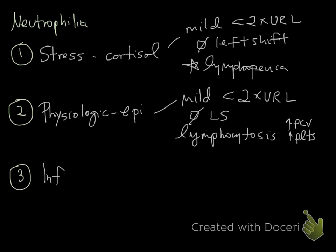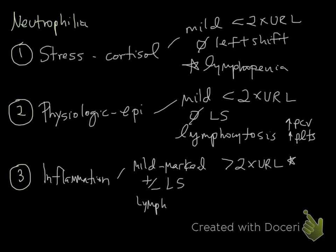And the last neutrophilia, the most important neutrophilia to recognize, is inflammatory or inflammation. And this actually has a lot of different ways of characterizing it, but I'm going to give you some general things. So the degree can be mild to marked. So anything greater than two times the upper reference limit proves it, but it can be less than. You can have a left shift or not, so you can have bands or less mature forms. Lymphocytes can be low if there's stress. It can be normal, or they can be increased in chronic inflammation. You can also see increases in monocytes. And the neutrophils themselves can have something called toxic change.